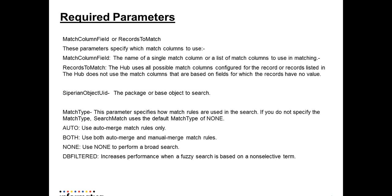With the system object UID, we need to pass the package or base object on which we want to do a search. We also need to pass the match type. There are 4 types of match type: auto — which uses auto merge rule only; both — which uses auto merge as well as manual match rule; and none — which does not use any match rule and creates a match rule on the fly using field purpose to do search and match.